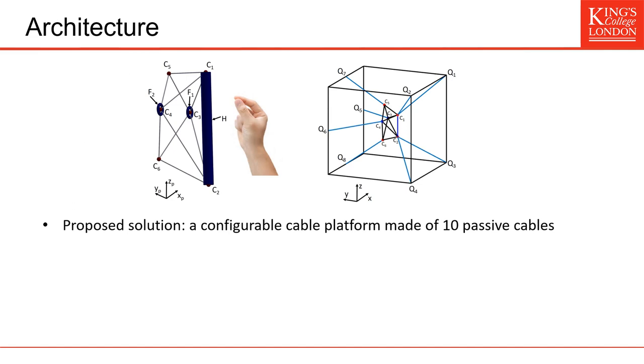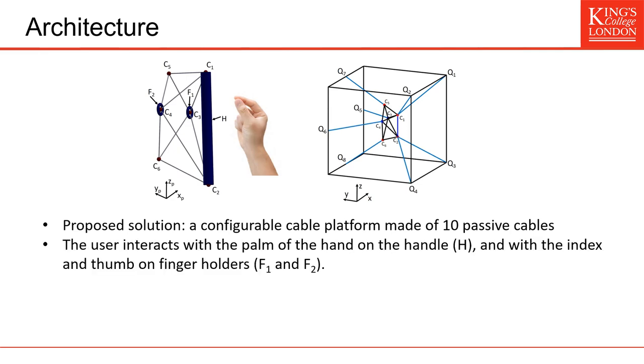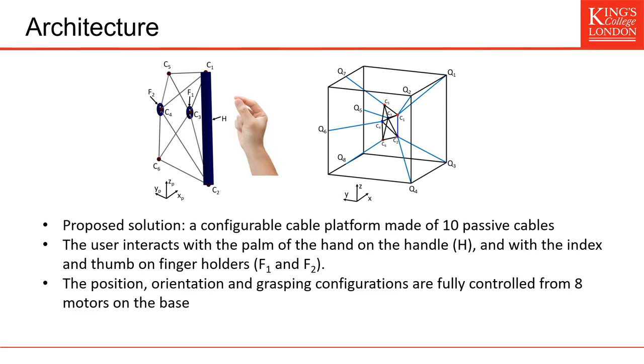So here on the left you see the cable platform. It is made of 10 passive cables and the way you interact with it is that you use the palm of your hand on the handle H and with your index and thumb fingers you interact with the finger holders F1 and F2 also labeled C3 and C4 in this case. And the position orientation and grasping configurations are fully controlled from eight motors on the base.